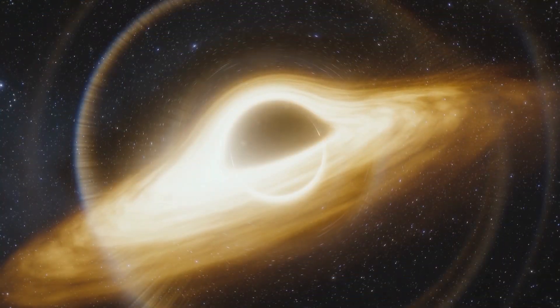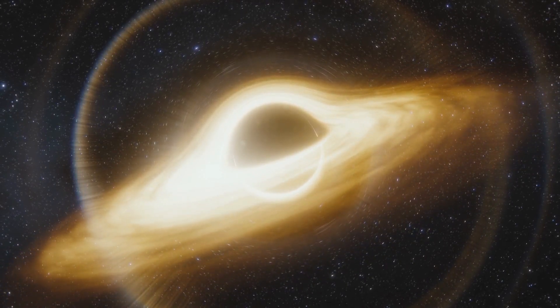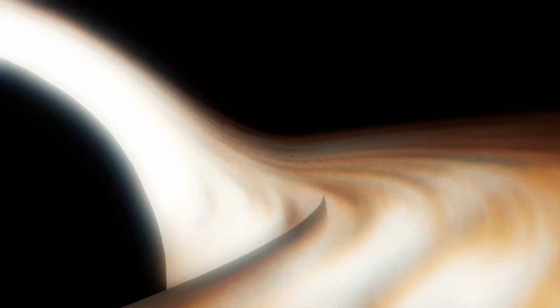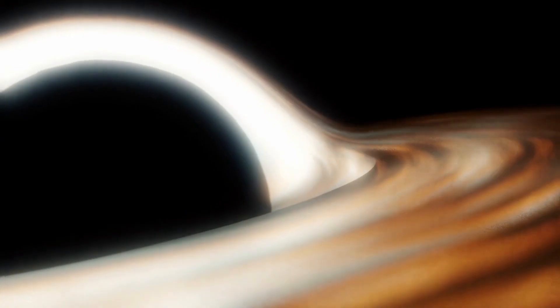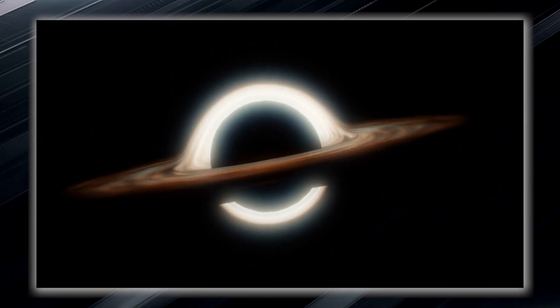This is where things become truly extraordinary. The gravitational pull near a black hole is so incredibly strong that it creates what is known as an event horizon. The event horizon is not a physical barrier, but rather a region where space gradually bends. It is an invisible boundary or point of no return.